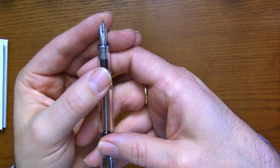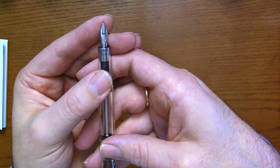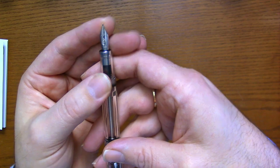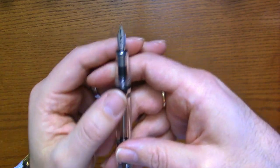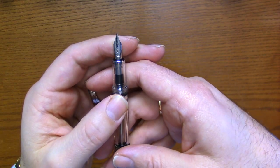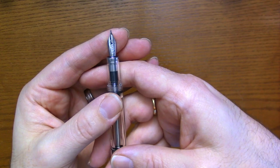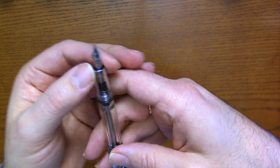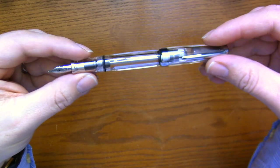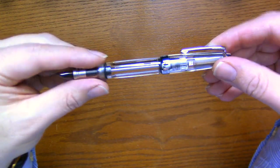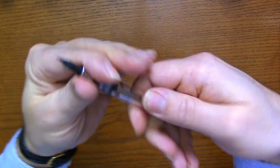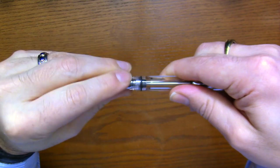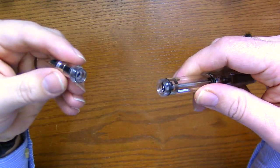It uses the smaller TWSBI nibs and these are available extra fine, fine, medium, broad (which this one is), and a 1.1 stub. 1.5 is no longer available. The section does unscrew so you can get replacement nibs.